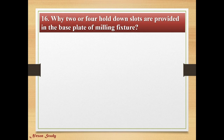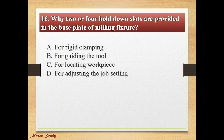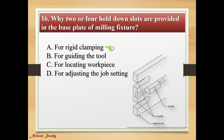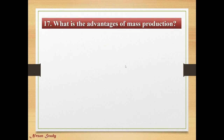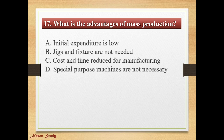Question: Why are two or four hold-down slots provided in the base plate of a milling fixture? Options: for rigid clamping, for guiding the tool, for locating the workpiece, for adjusting the job setting. Right answer is for rigid clamping. This is the base plate and slots.